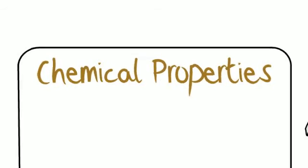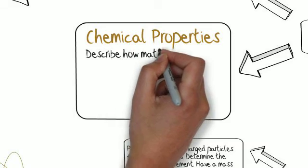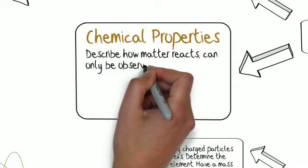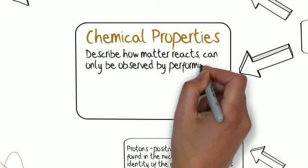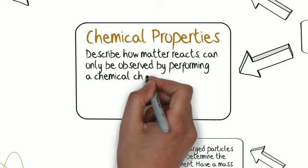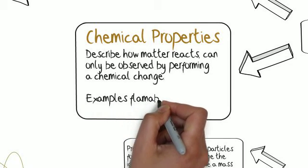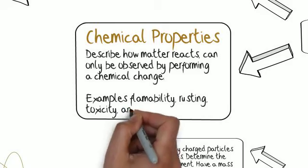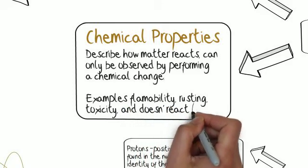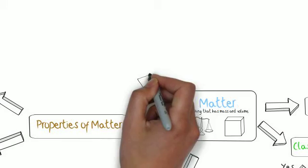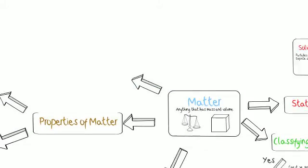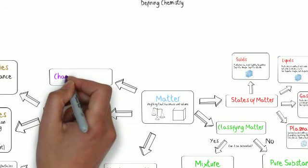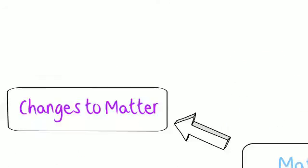And then we have what are known as chemical properties. And chemical properties describe how matter reacts. And these can only be observed by performing a chemical change. And we're going to talk about chemical change in a second. But examples of this would be flammability. If something burns, if it rusts, is it toxic? Does it not react at all? Which is known as inert. Those are chemical properties and they can only be observed by actually doing a chemical change.